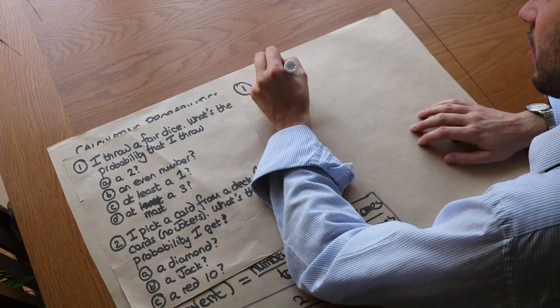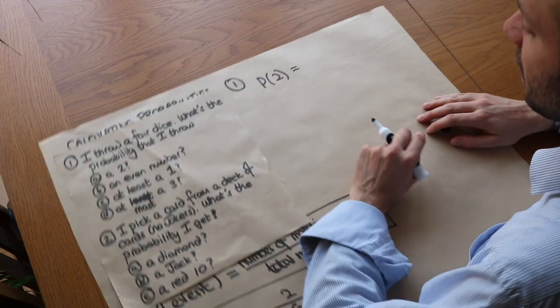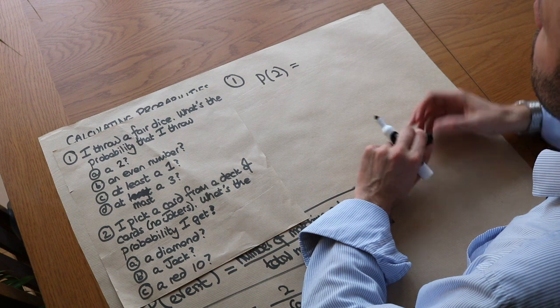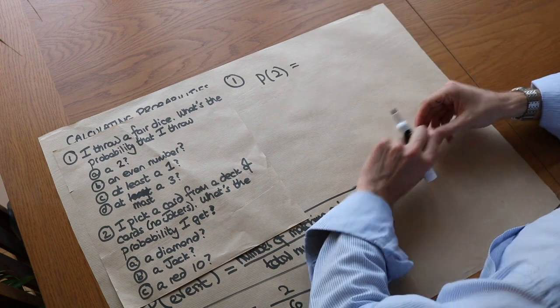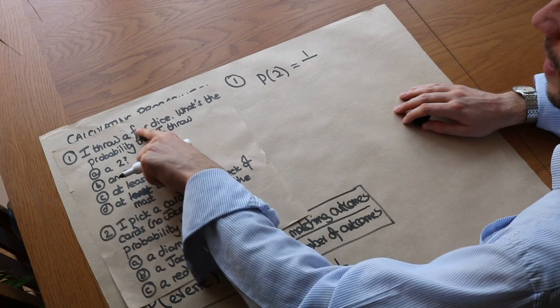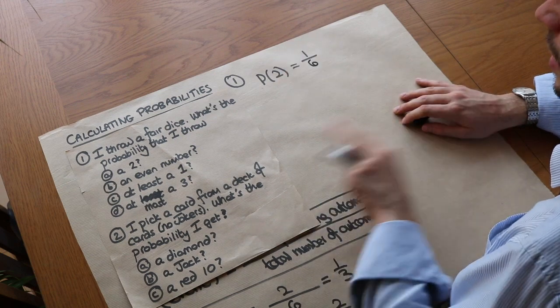So what's the probability of getting a two? I'm just going to write P(two) to mean the probability of getting a two. Now what's the total number of matching outcomes? Well there's only one number that's a two on a dice. So there's only one matching outcome where we get a two. And that's out of how many possible outcomes? Well there's six different outcomes on a dice. It could be one to six. So it's going to be one out of six.